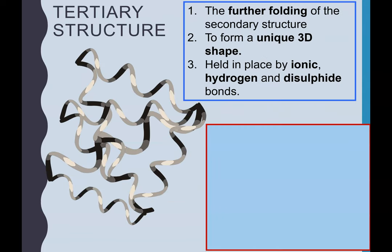Tertiary structure. This is now a three mark definition. The three key marks are: the protein gets further folded, so the secondary structure is then folded in on itself. In doing that, you create this unique 3D shape. And finally, it's for pointing out what is holding that 3D shape in position. There's even more bonds: the ionic bonds, hydrogen bonds, and disulfide bonds. That would be your three mark definition of what the tertiary structure of a protein is.